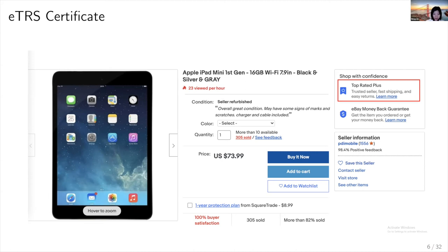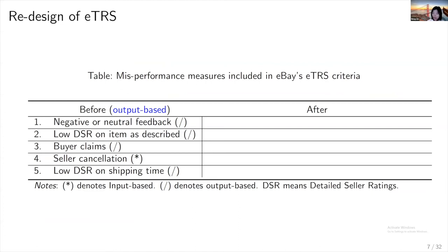To earn the certificate under the old regime, sellers needed to maintain a defect rate no higher than 2%, combining: negative or neutral feedback, low detailed seller ratings on item description, buyer claims, seller cancellations, and low detailed seller ratings on shipping. As you can see, the old regime put a lot of weight on consumer reported information — four out of five measures are consumer reported — and only seller cancellations can be considered direct seller input. Therefore, in the old regime, consumer feedback was highly influential as to who gets the badge.